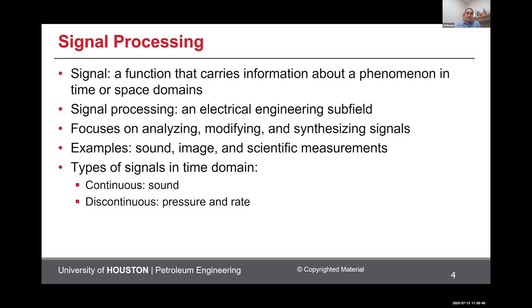In one categorization, signals can be divided into two types: continuous, like sound, which you hear continuously; and discontinuous, where we pick points or samples from continuous signals — like the pressure and rate we record from the field, which are discontinuous signals because we have sample readings every second or every other second.